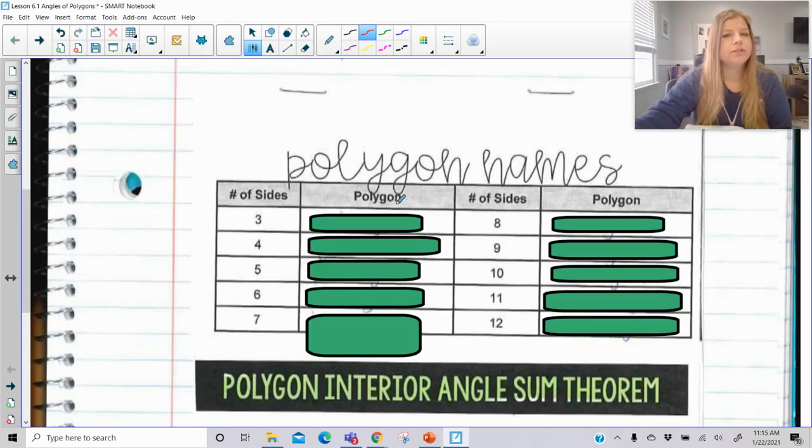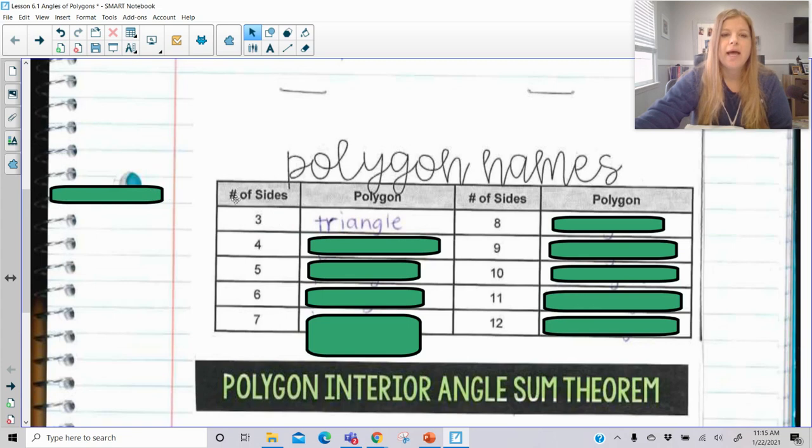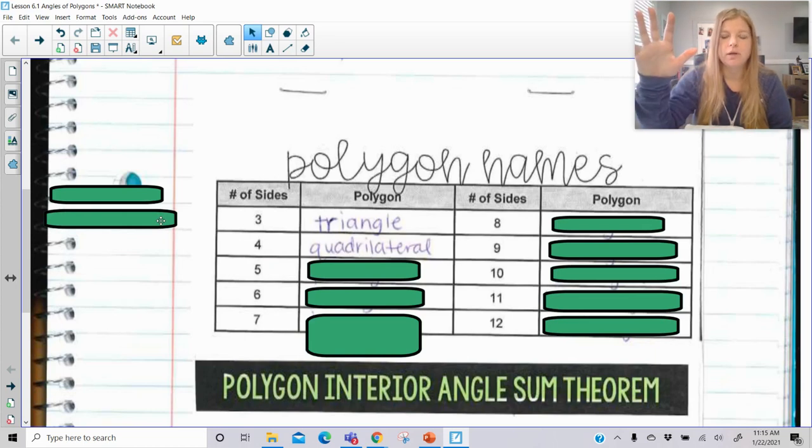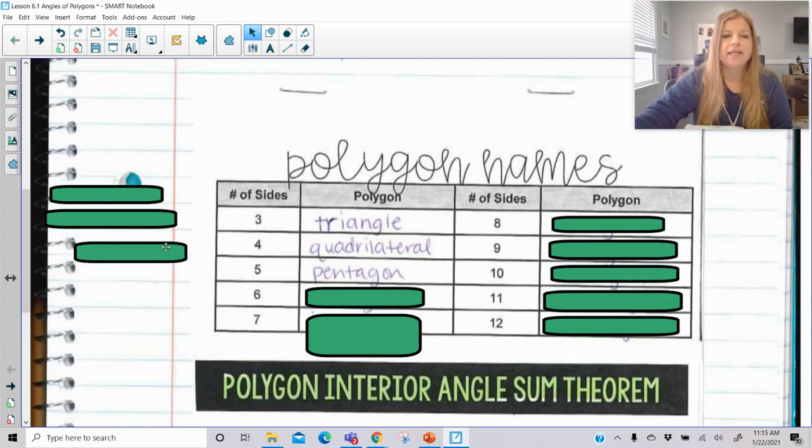Polygon names. So these are going to be some classic polygon sides, number of sides rather, and the names that go along with those polygons. So we should know a three-sided figure is a triangle, a four-sided polygon. Sometimes people want to say square or rectangle, but that's a specific type of quadrilateral. So when we talk about a four-sided figure, we use quadrilateral because that's the overall name for a four-sided figure. Five-side is pentagon. Six-side is hexagon.